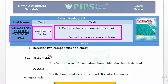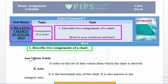The first topic is components of a chart. Write this question in your notebook: describe two components of a chart. There are different components of a chart such as chart title, axis title, chart area, axis, y-axis, and data table, but we have to define only two of them.